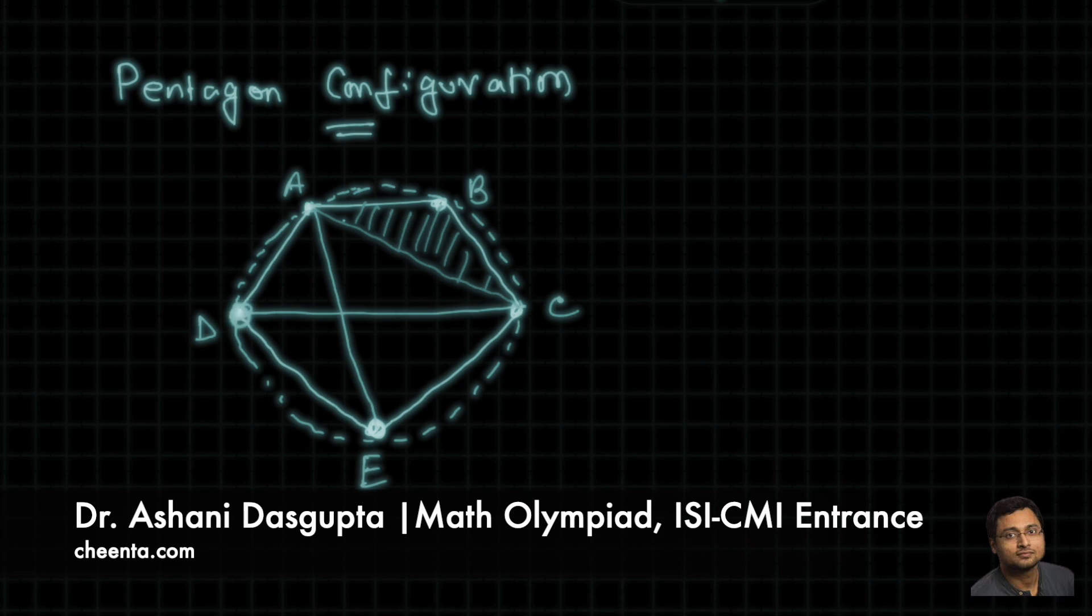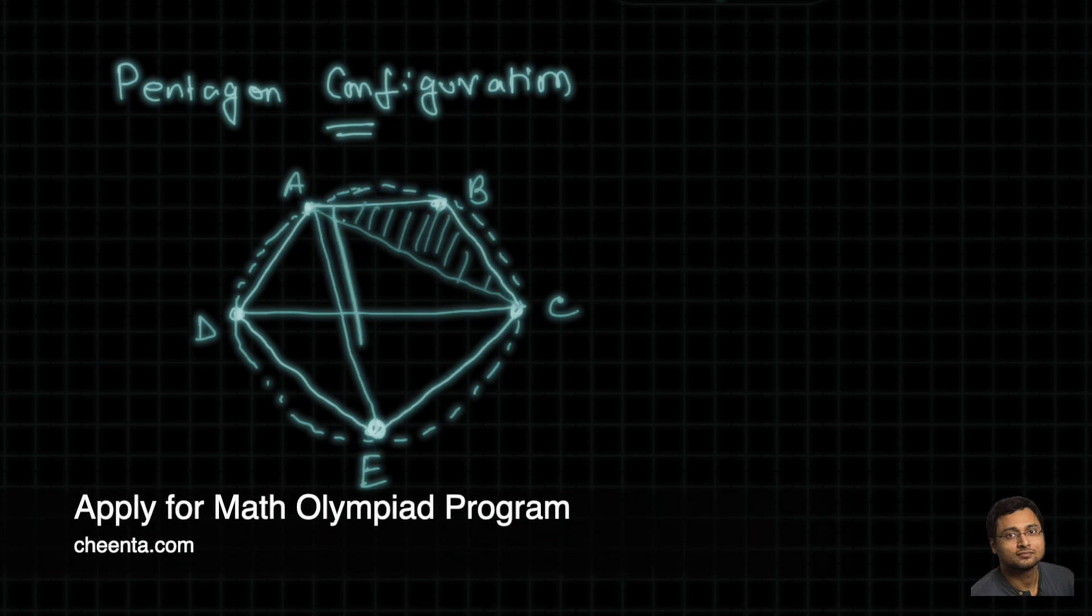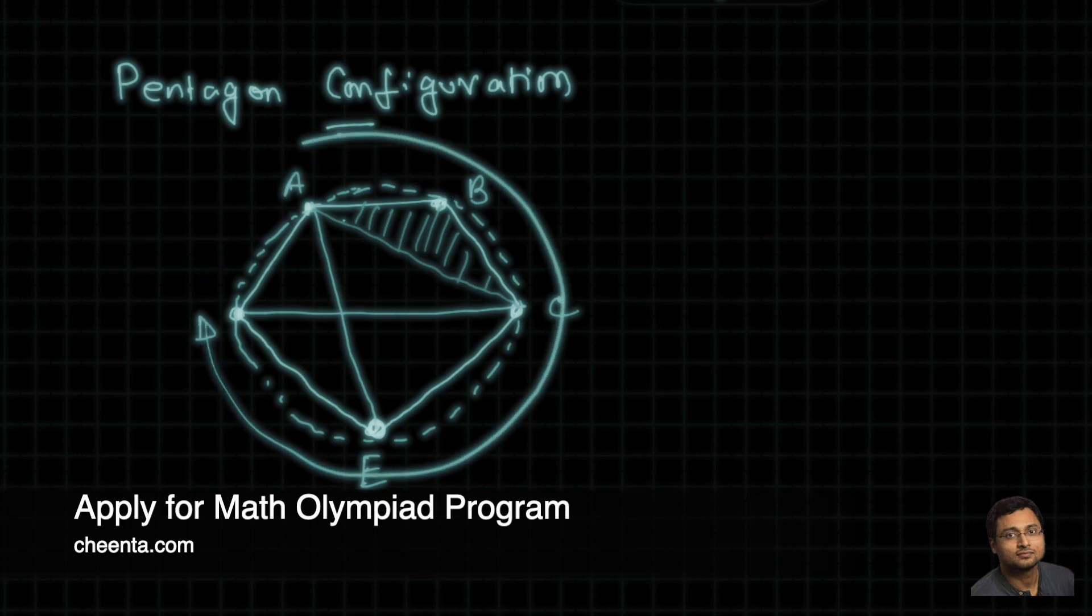D lies on that particular circle because ABCD is cyclic. E lies on that particular circle because A, B, C, E is cyclic. So we conclude that all of these five points lie on the same circle.